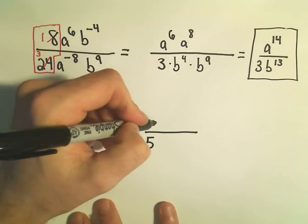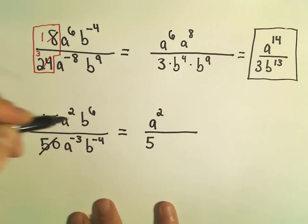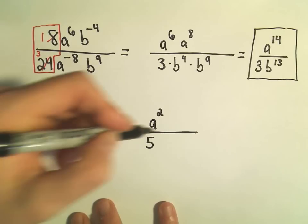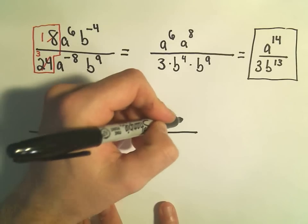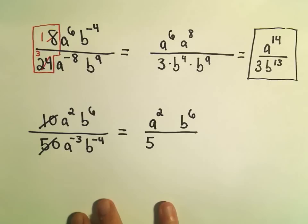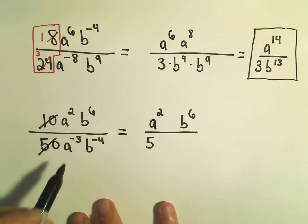I look at my a squared. It's already positive, so I'm going to leave it on top. b to the 6th is already positive, so I'm going to leave it on top. And I'm going to give myself a little bit of room inside of there. Just so I can stick the a's together and the b's together.